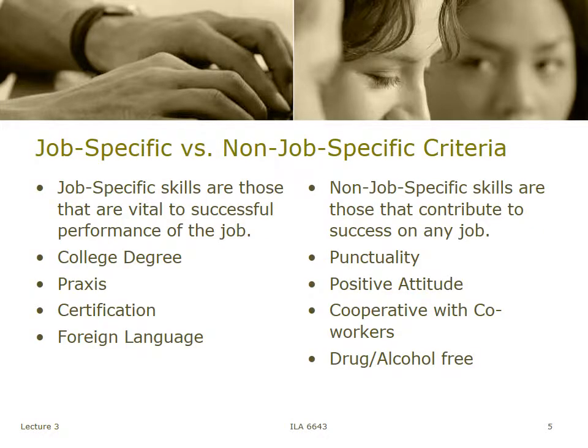We typically break down skills for effectiveness into two categories — and this is not just education, this is employment across the spectrum. The first and most important set are job-specific skills; these are vital to successful performance of the job. Then there are the general or non-job-specific skills — those that would be good for any job. For a teacher, job-specific skills include a college degree, passing the Praxis exam, and certification. Non-specific skills include punctuality, positive attitude, ability to cooperate with co-workers, and being drug and alcohol free.